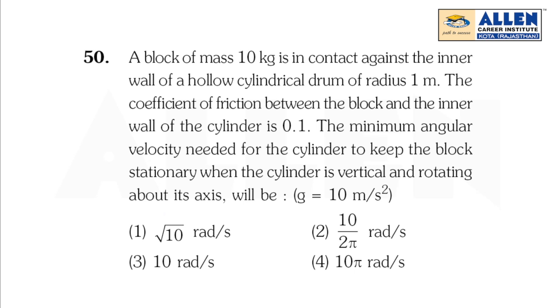The value of g is 10 meter per second square. According to the question, the cylinder is vertical and rotating about its axis with some angular velocity omega.